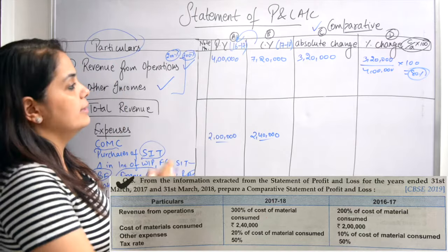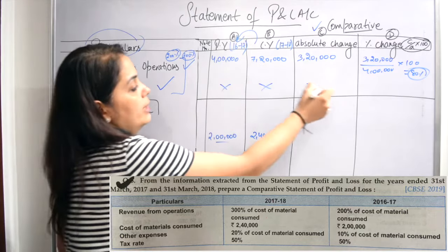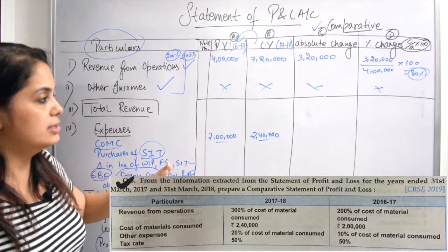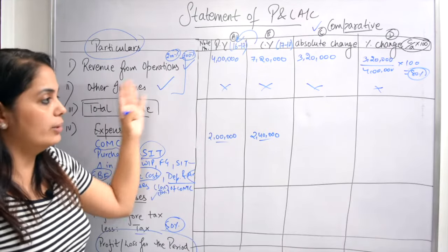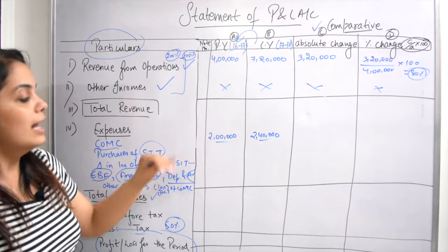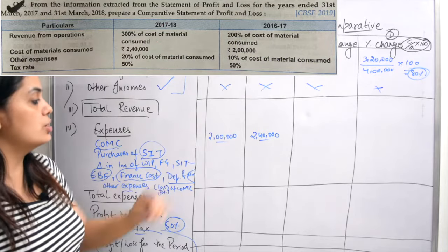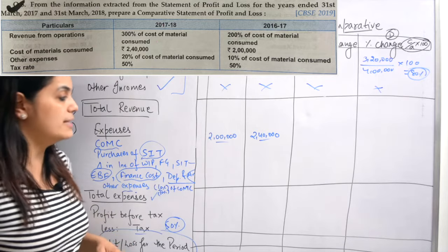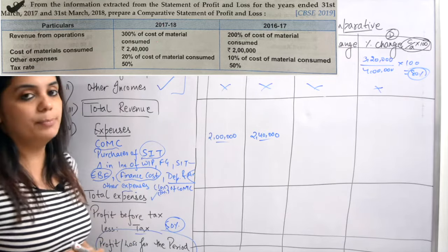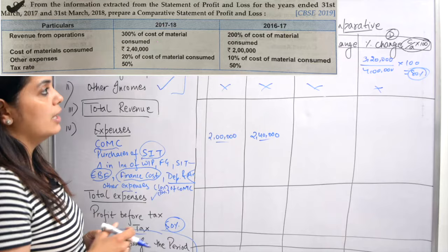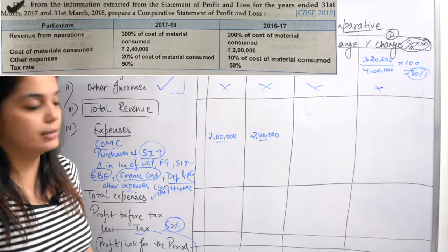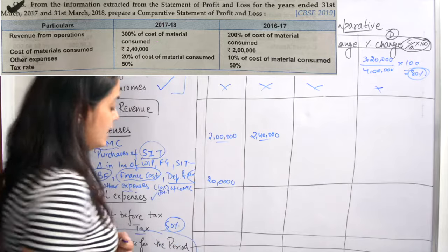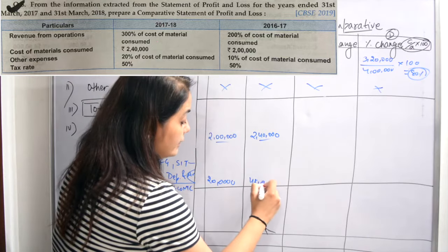Other income is not given in the question, so you leave it — you don't need to make the whole format for that. Now for expenses: there is cost of material consumed, and after that there are other expenses. Other expenses are 10% of cost of material consumed for the previous year and 20% for the current year. So this will come to 20,000 for previous year and 48,000 for current year.